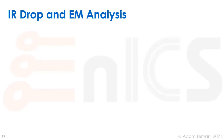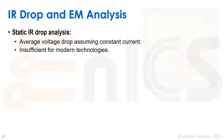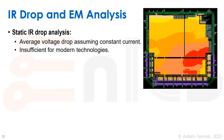The next stage during sign-off is what we call IR drop and electromigration analysis. We do several types — for example, Cadence provides a tool called Voltus that does this, PrimeTime has a tool that does it, and different companies have various tools for these types of analysis. Static IR drop analysis assumes a voltage drop when we have a constant current going through the chip.